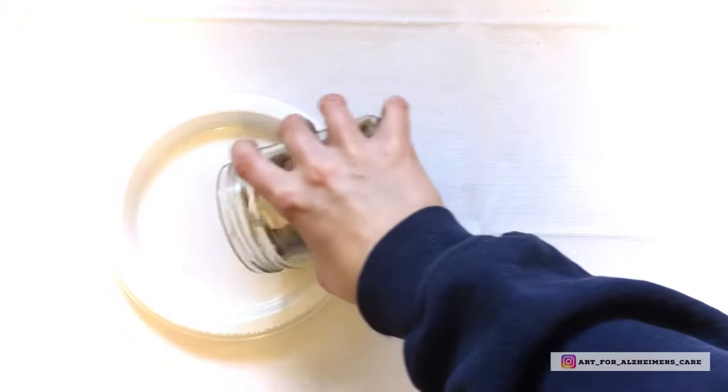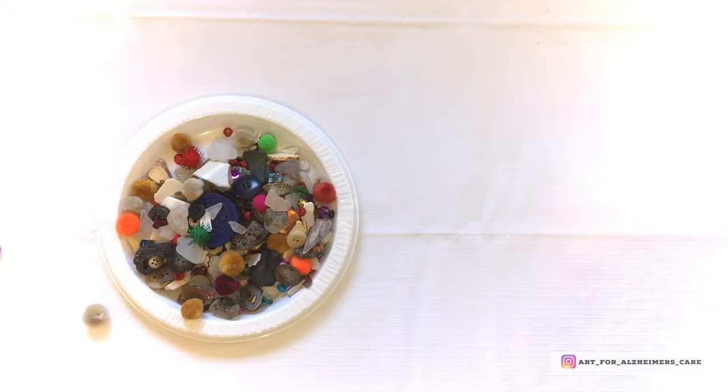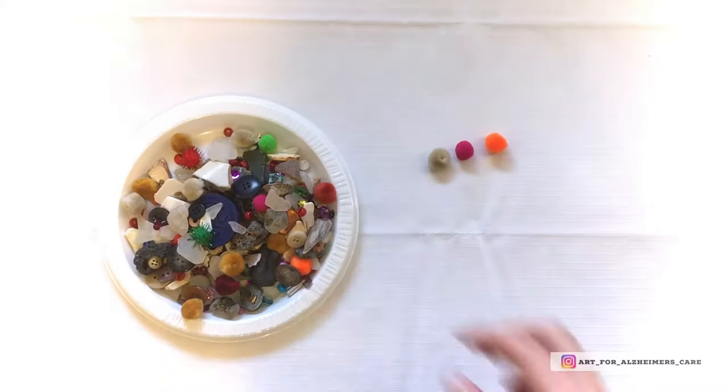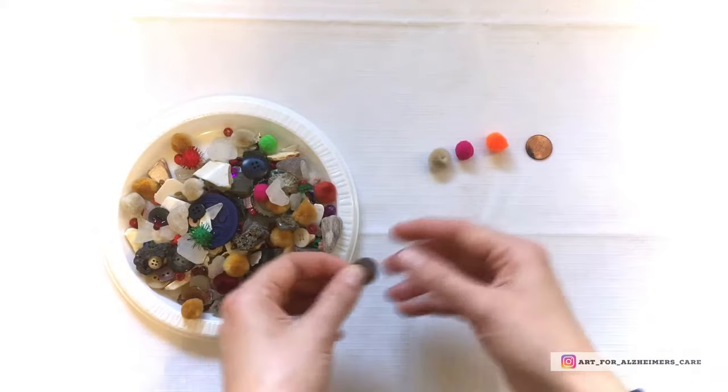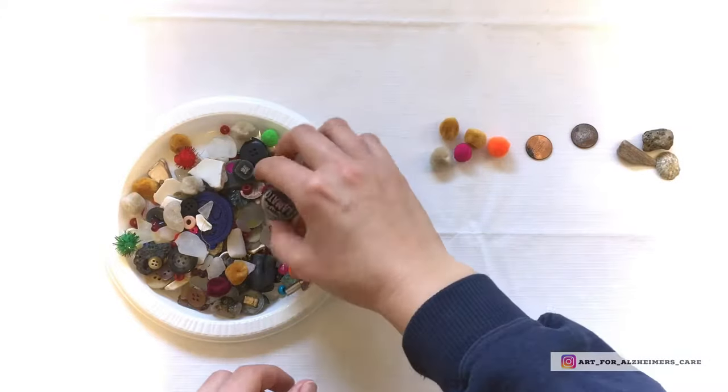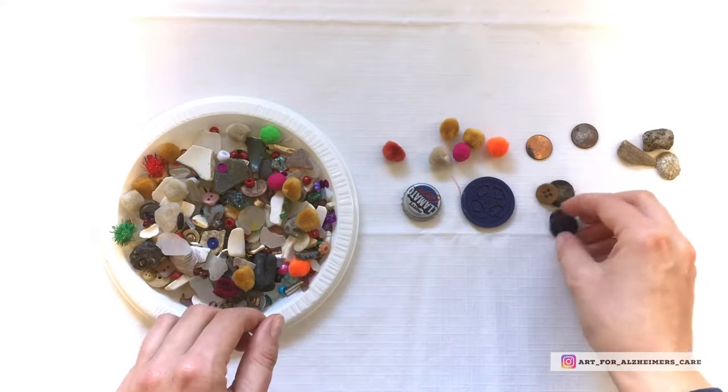So at home I keep a jar of just knickknacks and little bits and pieces, and I'll bring them into my groups and arrange them onto plates like this one that we see here. It's really fun for clients to just dig through and see what kind of items are in there. So here I'm just showing you what kind of items I keep in the jars.